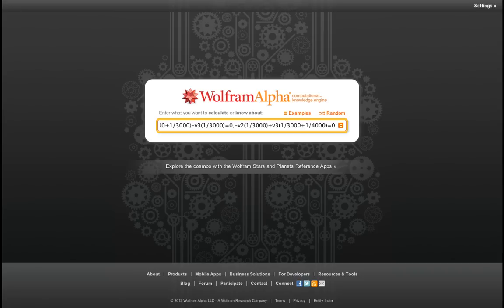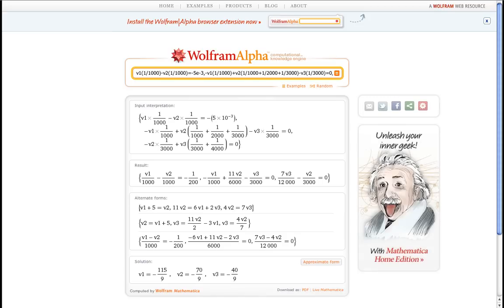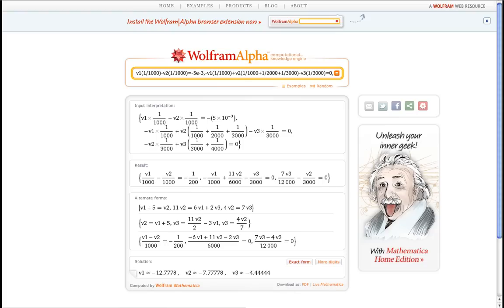Now, when I'm doing the computations, I'm not putting in units, because WolframAlpha and almost no other tool will understand what the units mean. So if I hit enter and ask WolframAlpha to do the computation for me, it gives me several lines. Input interpretation. It gives me a result. It gives me a solution down here. And that's what I want. I'll click on the approximate form to get a numerical solution. And so what it tells me then is that V1 is minus 12.78 volts, V2 is minus 7.78 volts, and V3 is minus 4.44 volts.